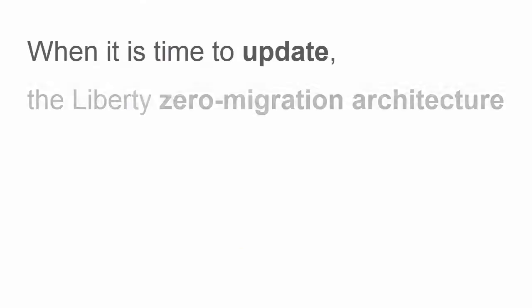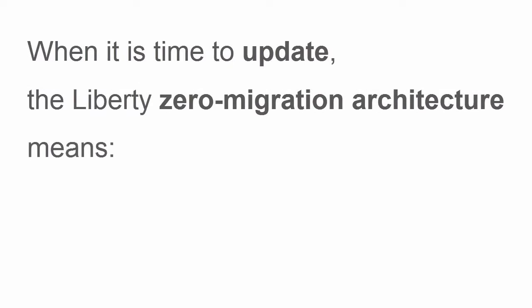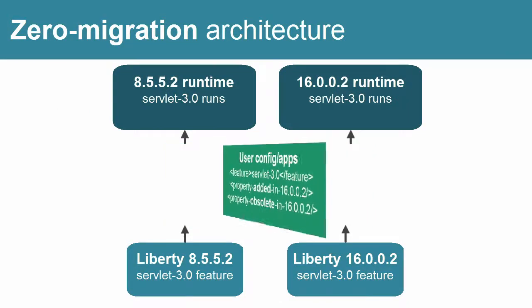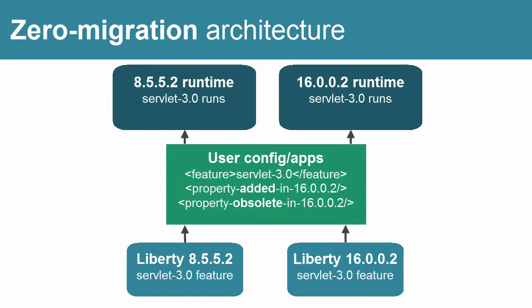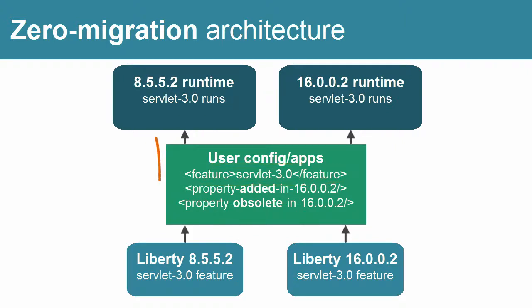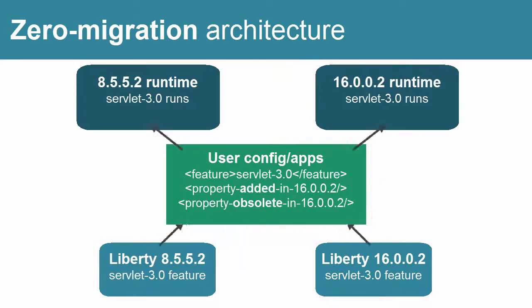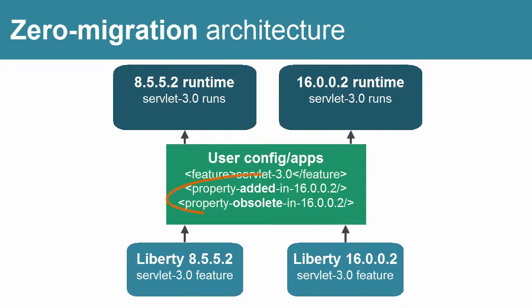When it is time to update, the Liberty Zero Migration architecture means you don't have to worry about reworking your server configuration or applications. The server configuration is fully backward and forward compatible, meaning that configuration for a newer release works with older releases, and older configuration works with the latest release. This means that if all configured features are installed, you can use a single set of configuration files from many different Liberty versions. Except for feature configuration, any items that do not apply to a particular server are just ignored.